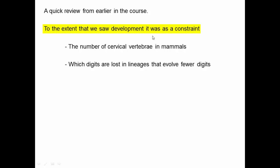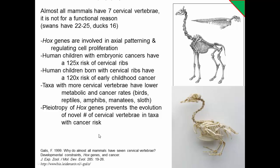To the extent that we looked at development, it was actually seen as a constraint. The number of cervical vertebrae in mammals was constrained because the Hox genes responsible for the development of cervical vertebrae were also associated with cell growth and cancer risk. This was the cervical vertebrae example where Hox genes were associated with increased cancer risk as well as the number of vertebrae.